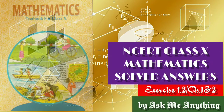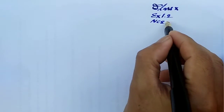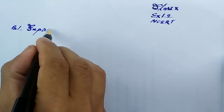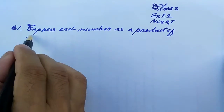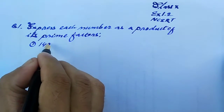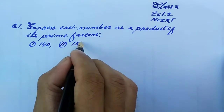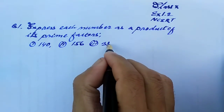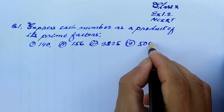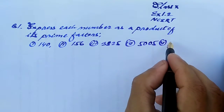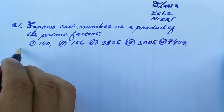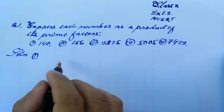Okay, I'm coming back again with the solutions of Exercise 1.2, question number 1 and 2. If you want to watch the solutions of Exercise 1.1, please click the 'I' button or go to the link given in the description below. Let us try to understand the meaning of question number 1: it says express each number as a product of its prime factors. The numbers are (i) 140, (ii) 256, (iii) 3,825, (iv) 5,005, and (v) 7,429.